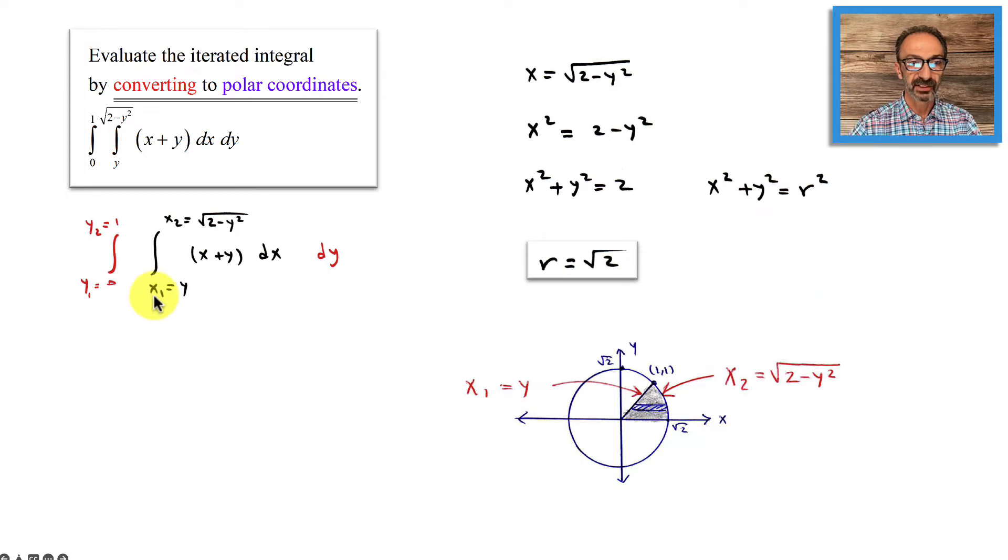Since this is my x1 equals y and x2 equals, it's kind of hard to integrate and plug these expressions inside. So that's the reason why sometimes we need to convert to polar coordinates. This is my x1 equals y, that's like y equals x, 45 degrees, and this right here will be part of a circle.